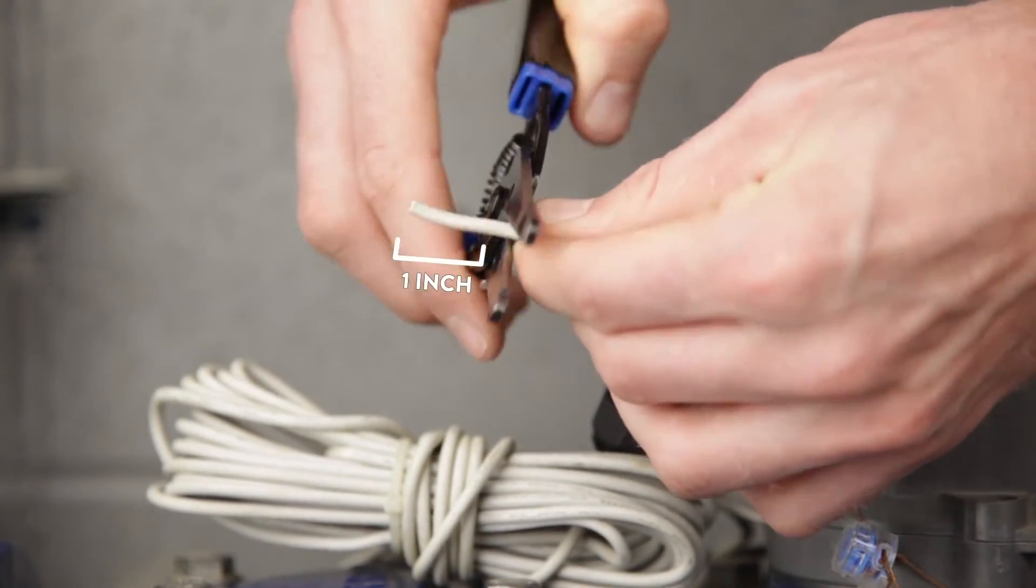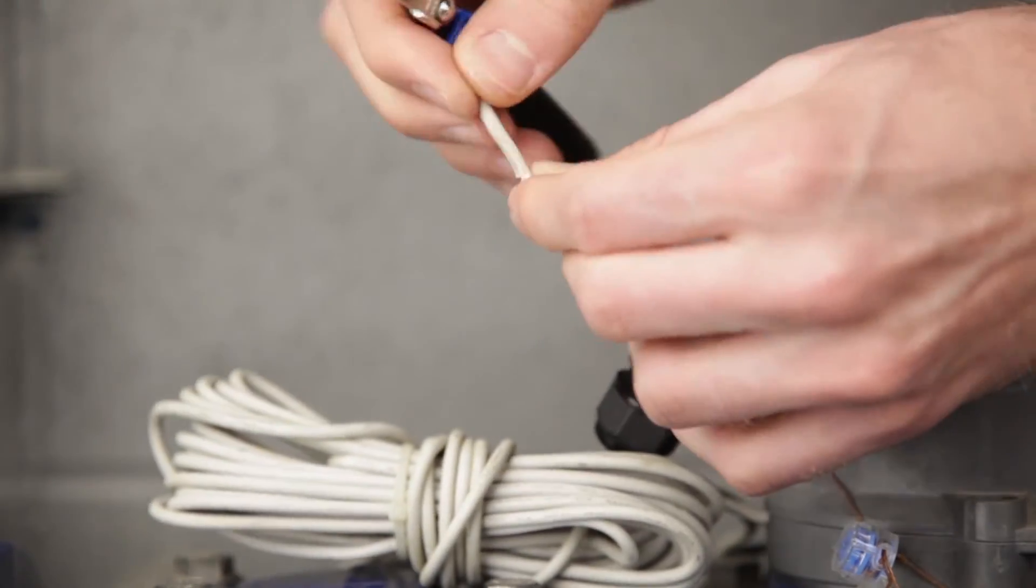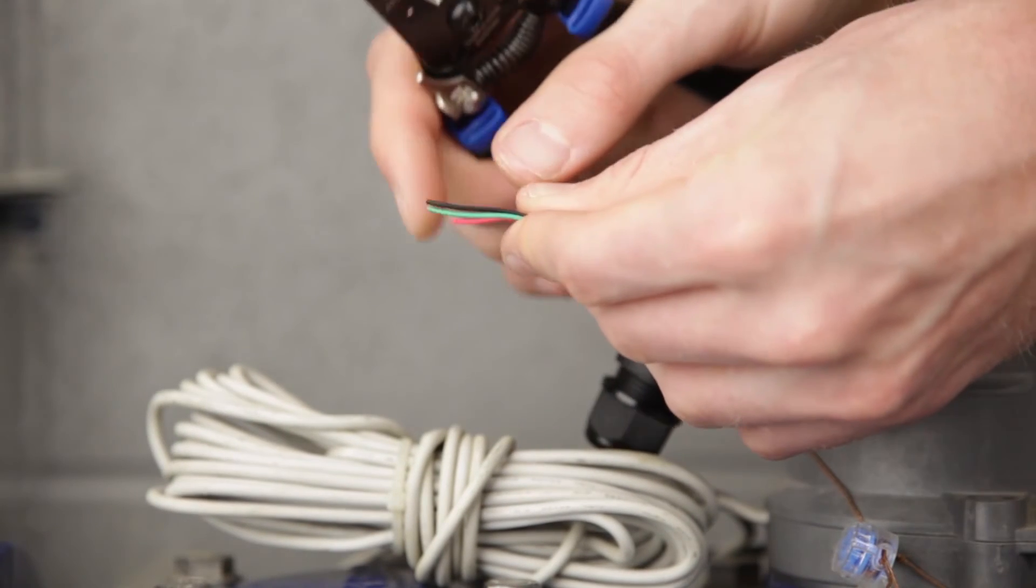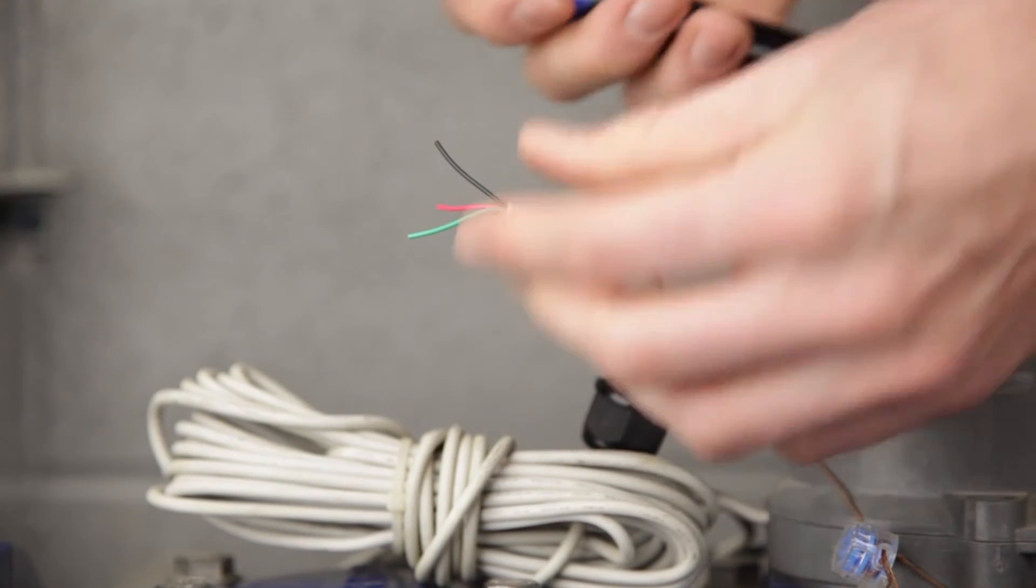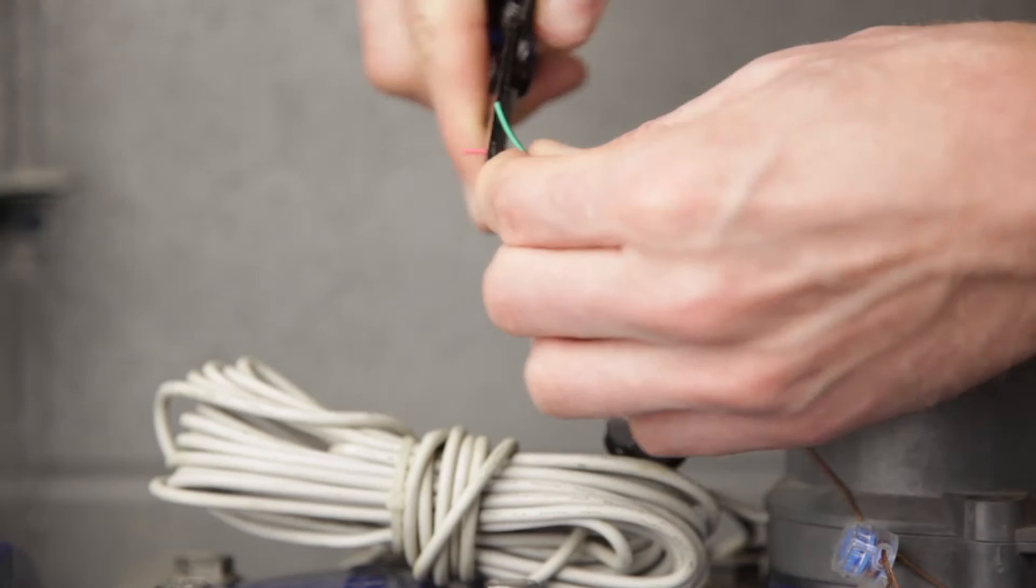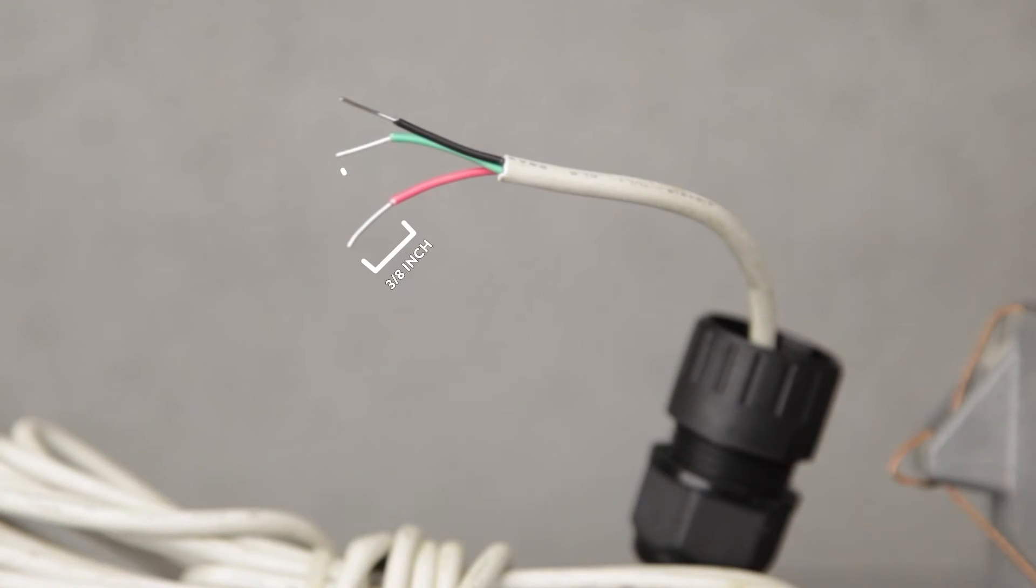Strip 1 inch off of the outer jacket of the pulse output cable to expose the red, green, and black wires. Make sure there are no cuts in the insulation of these wires. Strip 3 eighths of an inch off of each wire.